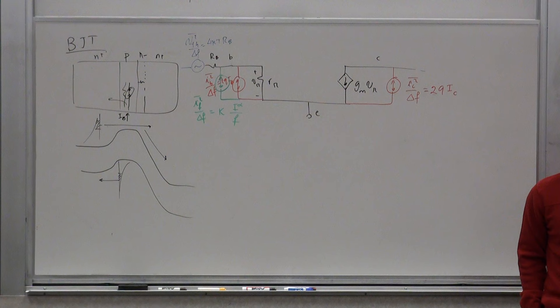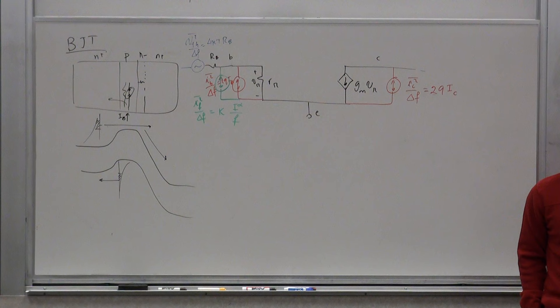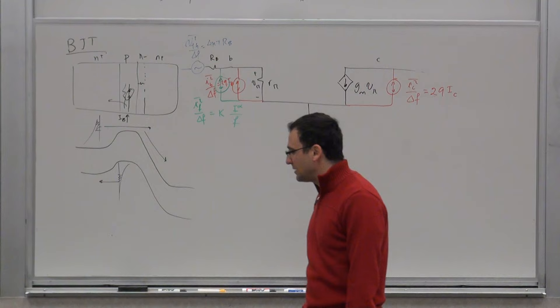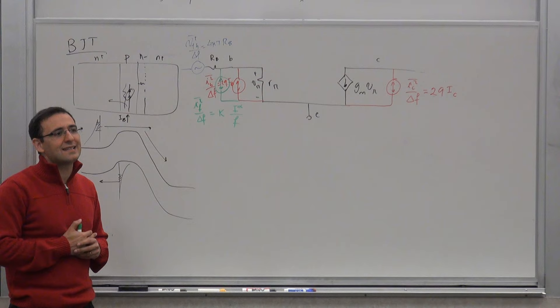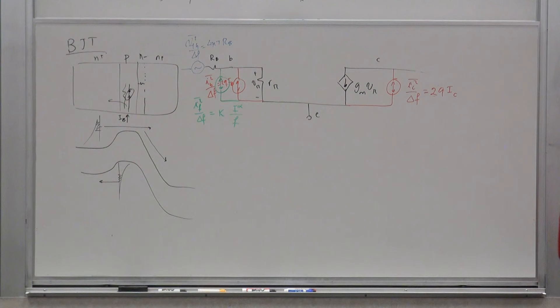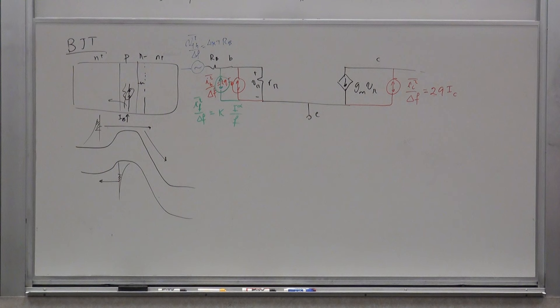Does flicker noise go up in an HBT compared to a regular BJT? Yes, slightly — because the base is a more heterogeneous structure and more prone to imperfections. However, it's really a question of the quality of fabrication. If you get a good process and make everything clean and anneal properly, you can reduce it.